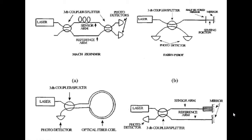Phase modulation is simple: your light source gets deviated when external pressure or temperature is applied. You take one as a reference and another as the deviated signal, compare these two light sources, and calculate how much light has deviated from the original source. Based on that calculation, you measure how much phase modulation has taken place in that particular area.